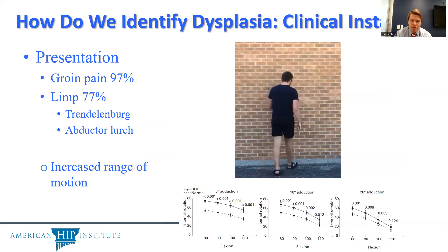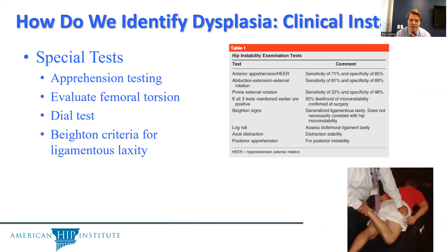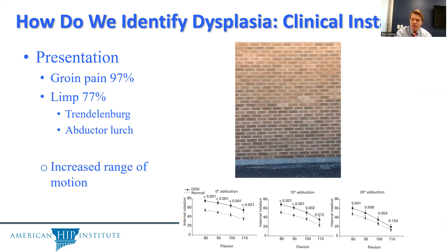Clinically, identifying patients who should be referred is important. Patients often present with groin pain 97% of the time. An abnormal gait is present in 77% of patients with dysplasia, often from abductor overload or abductor fatigue. Increased range of motion, particularly of the unaffected hip, can also be a clue — dysplastic patients often have greater ROM than patients with femoroacetabular impingement, which may indicate underlying dysplasia.